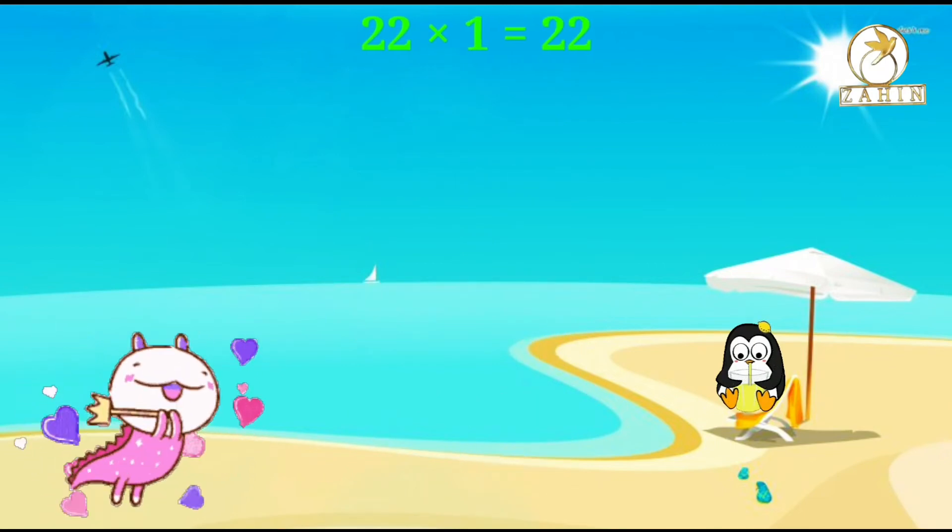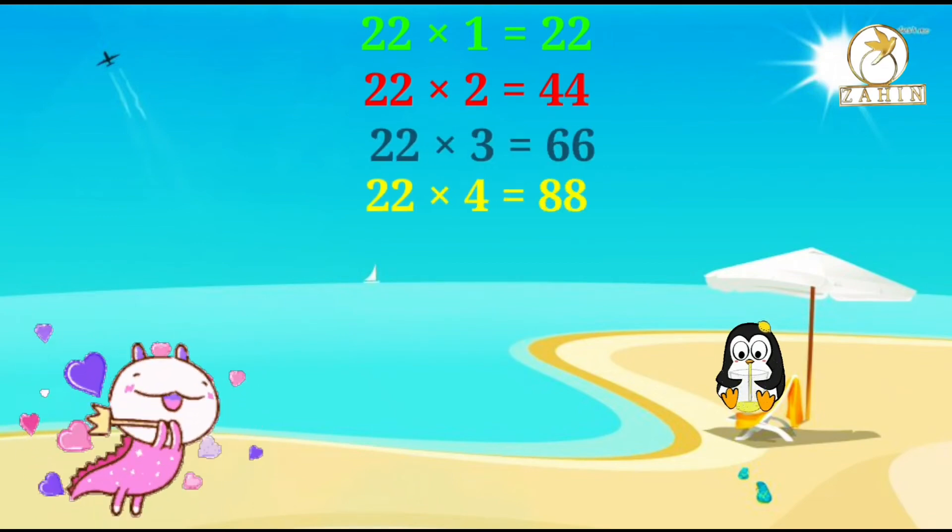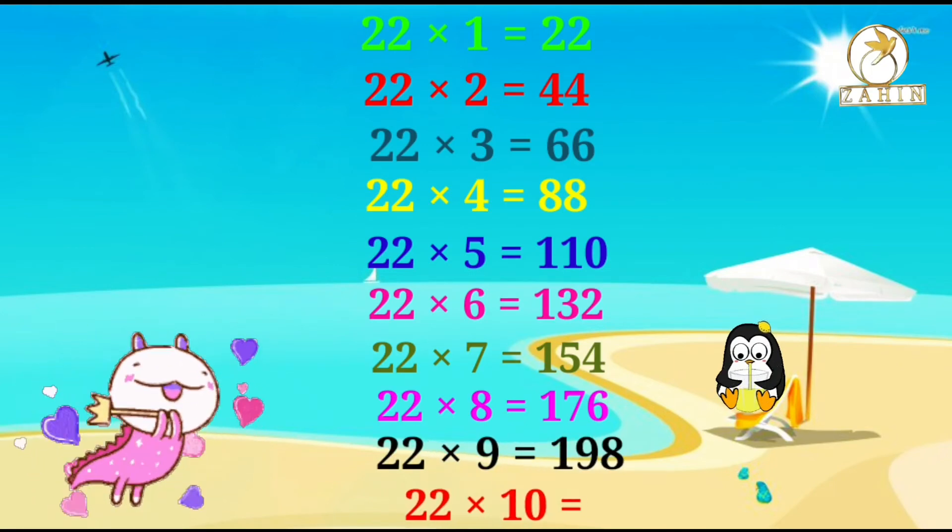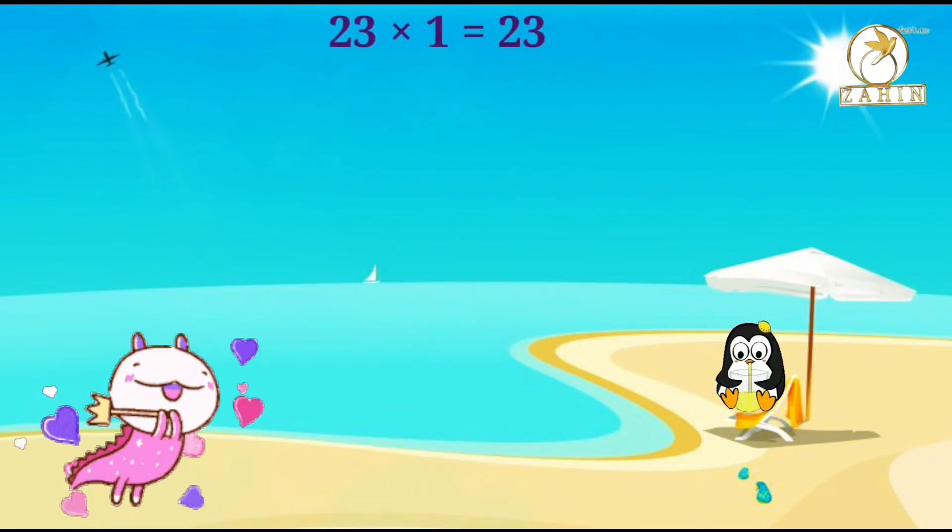22 times 1 equals 22, 22 times 2 equals 44, 22 times 3 equals 66, 22 times 4 equals 88, 22 times 5 equals 110, 22 times 6 equals 132, 22 times 7 equals 154, 22 times 8 equals 176, 22 times 9 equals 198, 22 times 10 equals 220. 23 times 1 equals 23.